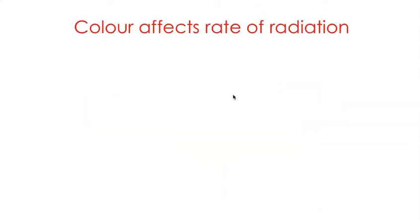So colour affects the speed of radiation. Students may well be shown an unfamiliar example in an exam, so it's good to get them discussing lots of real-life situations to help embed this concept.